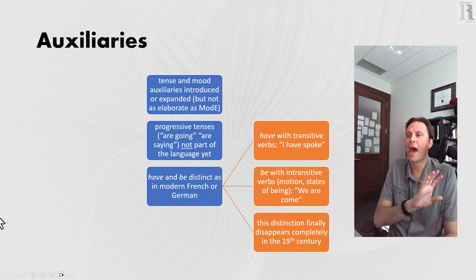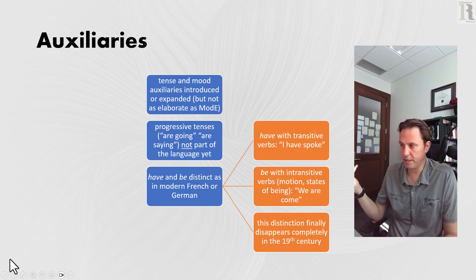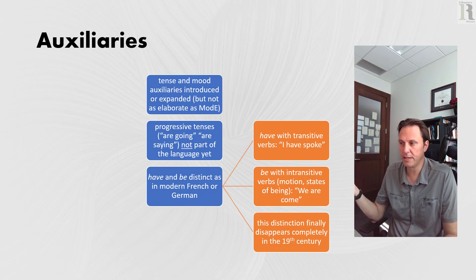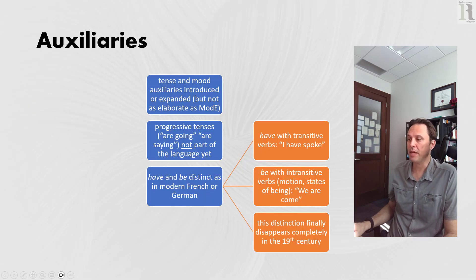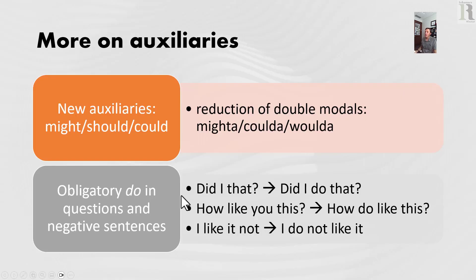This distinction only finally disappears completely in the 19th century when 'have' takes over in pretty much all cases. The movie Oppenheimer features that famous quote from a 19th-century translation of the Bhagavad Gita: 'I am become death, shatterer of worlds.' That 'I am become' is an archaic use of 'be' as the helper verb with the intransitive verb 'become.' New auxiliaries like might, should, and could also appear in this period.